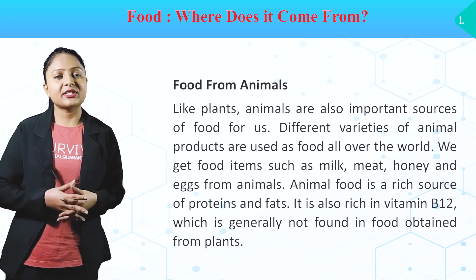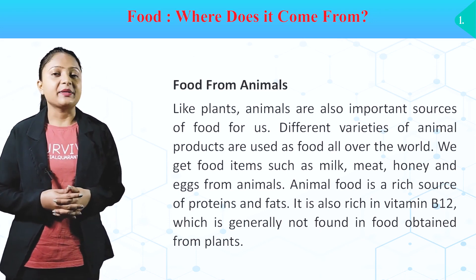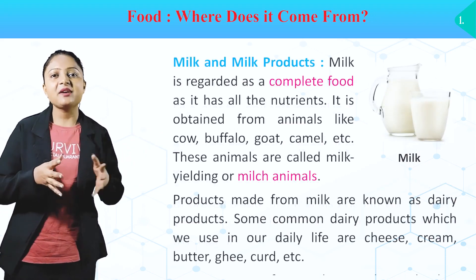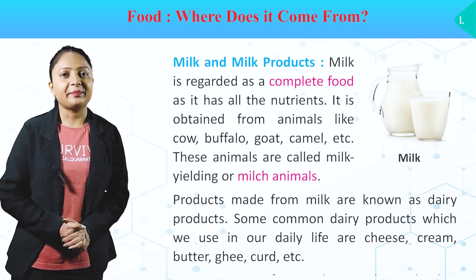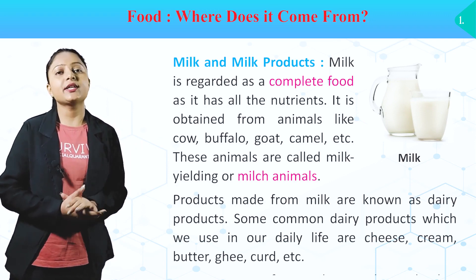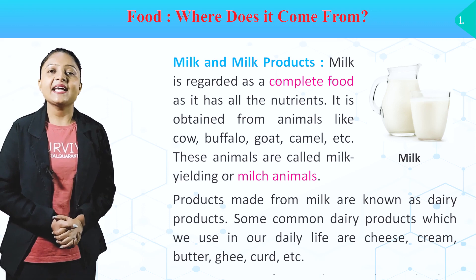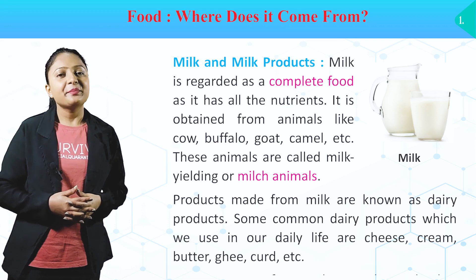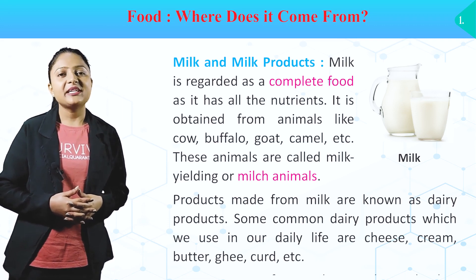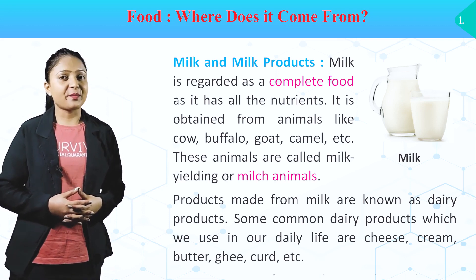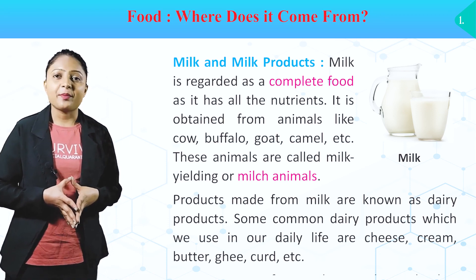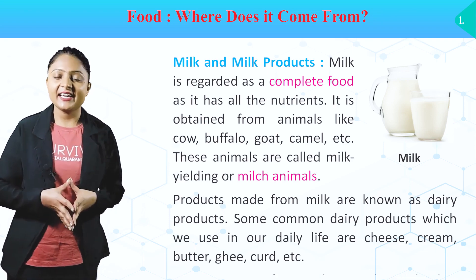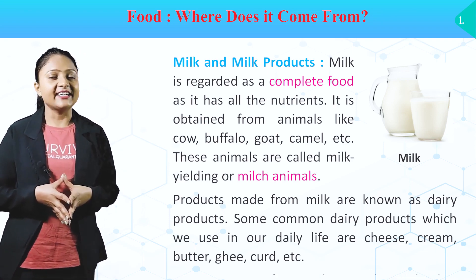Ab hum kuch aise foods ke baare mein baat karenge jo ki humay animal se milte hai. Let's look at first milk and milk products. Milk is regarded as complete food as it has all the nutrients. It is obtained from animals like cow, buffalo, goat, camel, etc. These animals are called milk-giving animals. Products made from milk are known as dairy products. Some common dairy products are cheese, cream, butter, ghee, curd, etc.